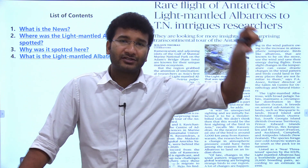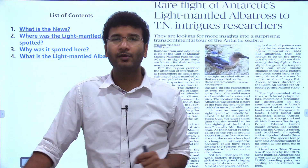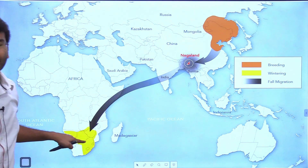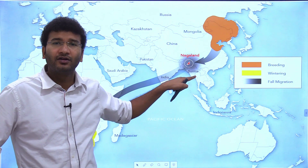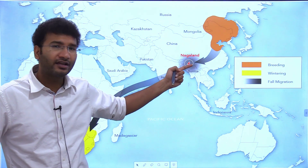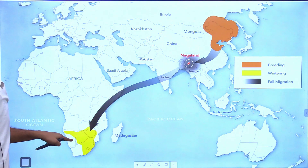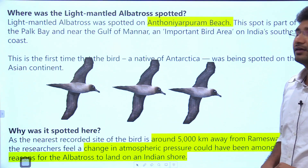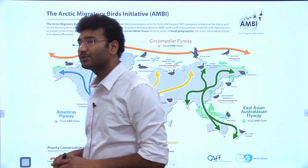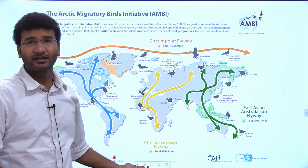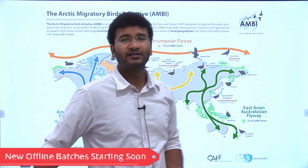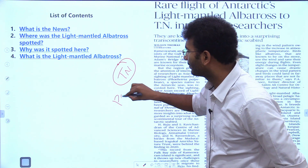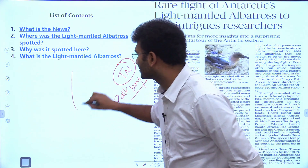Birds move from one place to another where they find suitable conditions. A remarkable example is the Amur Falcon, which travels all the way from Mongolia to South Africa, stopping for just two to three days in Nagaland to eat before flying on. The bird in this article is the Albatross, which is generally found in Antarctica but has now come to Tamil Nadu — specifically near Palk Bay in the Gulf of Mannar.